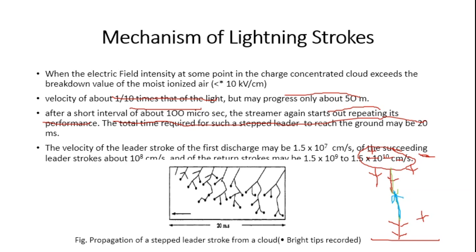The velocity of the leader stroke for the first discharge is around 1.5 × 10^7 cm/s, and succeeding leaders have stroke velocities of around 10^8 cm/s. The return stroke has a velocity ranging from 1.5 × 10^9 to 1.5 × 10^10 cm/s. So there is the step leader touching the ground and a return path going back up.